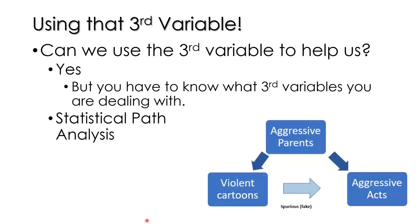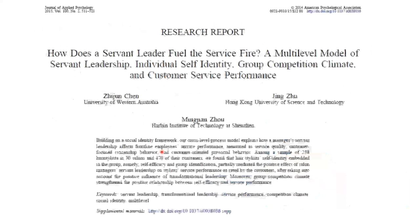Can we use the third variable to help us? Yes, but you have to know what that third variable is. Once you do, you can use something called statistical path analysis to look at violent cartoons, that quasi-independent variable, and aggressive acts, and then identify and measure the third variable — aggressive parents. The statistical path analysis will show you that once you take away the effect of aggressive parents from these other variables, there's no relationship between violent cartoons and aggressive acts.